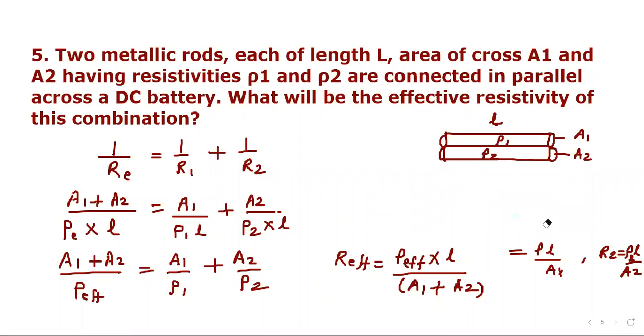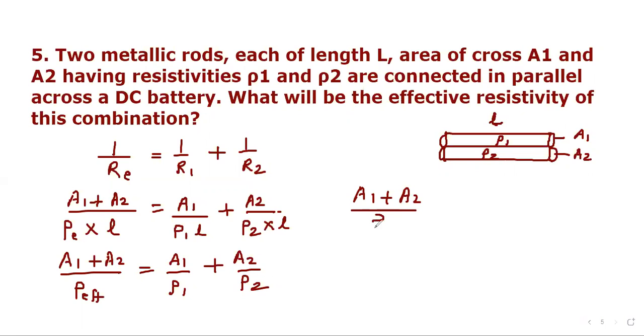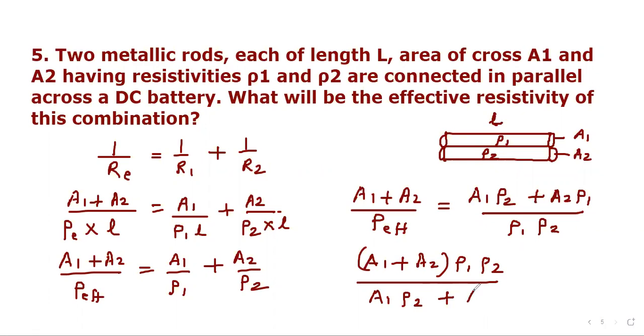Now we simplify. So from this equation we can write rho effective equals A1 plus A2 divided by the quantity A1 upon rho1 plus A2 upon rho2, which is the required effective resistivity.